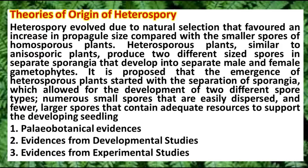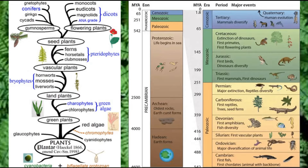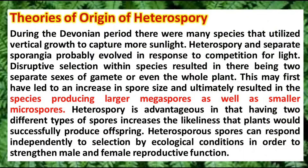There are three theories in support of heterospory and the development of seed habit: paleobotanical evidences, developmental studies, and experimental studies. During the Devonian period, heterospory originated. Many species utilized vertical growth to capture more light, and heterospory with separate sporangia probably evolved in response to competition for light. Disruptive selection within species resulted in two separate sizes, leading to an increase in spore size in the case of megaspores and a decrease in size in the case of microspores, and this led to the origin of heterospory, which eventually led to seed habit.